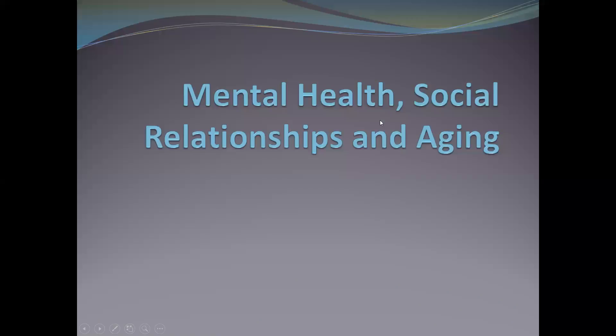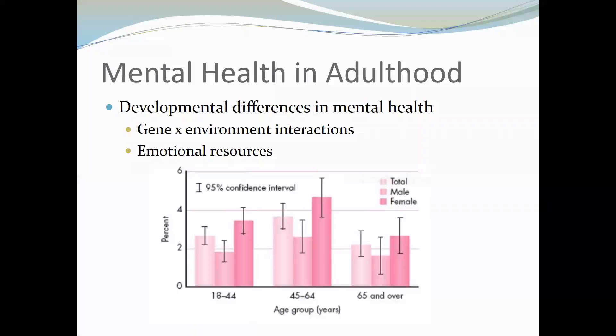This lecture combines two separate chapters: one on mental health and one on social relationships and aging. We'll start with mental health. Mental health in adulthood is often the result of a gene by environment interaction, where disorders develop from a genetic propensity in combination with cultural or environmental influences. One reason we see developmental differences in mental health is that people may get environmental influences at different times in adulthood.